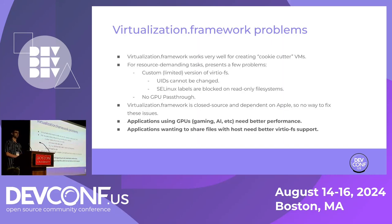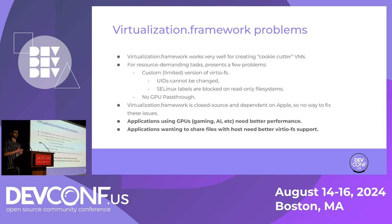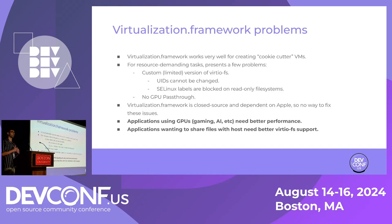This framework is great for cookie cutter virtual machines, but when it comes to more resource intensive tasks like GPU usage, gaming, or AI, a couple of problems come to light. First, Apple uses a custom downstream version of VirtIOFS, which causes issues where UIDs can't be changed or SELinux labels are blocked on read-only file systems. Most notably, there's no GPU pass-through. The framework is also closed source and dependent on Apple, which means there's no way to fix these issues ourselves. The key takeaway is: if your application wants to use a GPU for gaming or AI or share files with the host, you need better GPU pass-through and better VirtIOFS support.